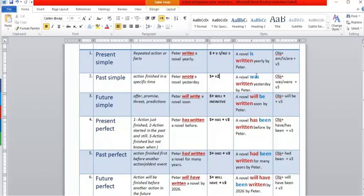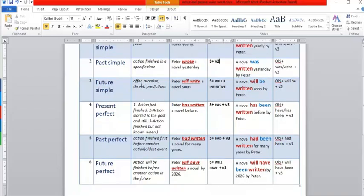For future simple, it is used especially when you offer something, promise, threat, or prediction. 'Peter will write a novel soon.' The form of it is subject plus will plus infinitive. When you make it passive voice, use object plus will be plus verb 3: 'A novel will be written soon by Peter.'